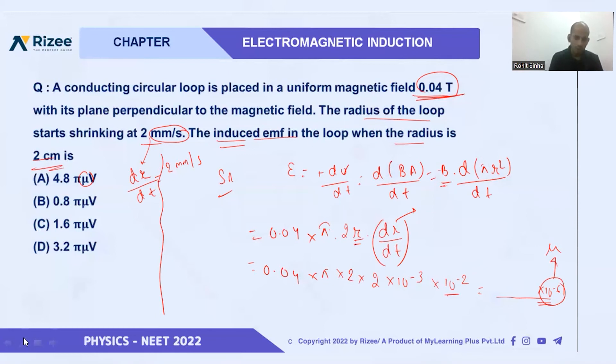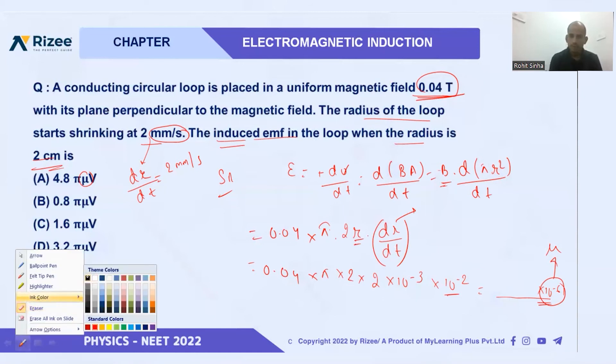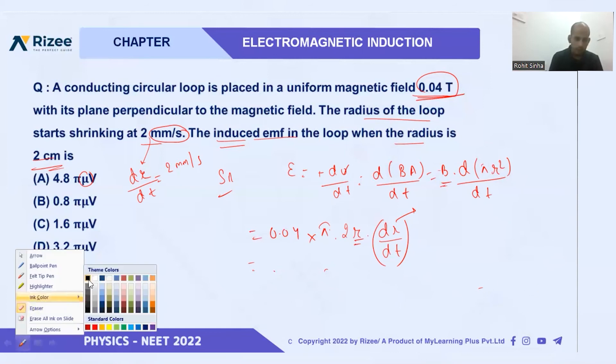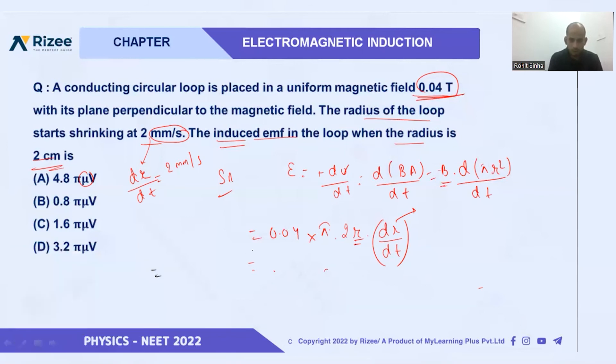Okay, I will explain once more. What we are doing - I will solve it in the last step. When we differentiate it, it is 0.04, the value of B.